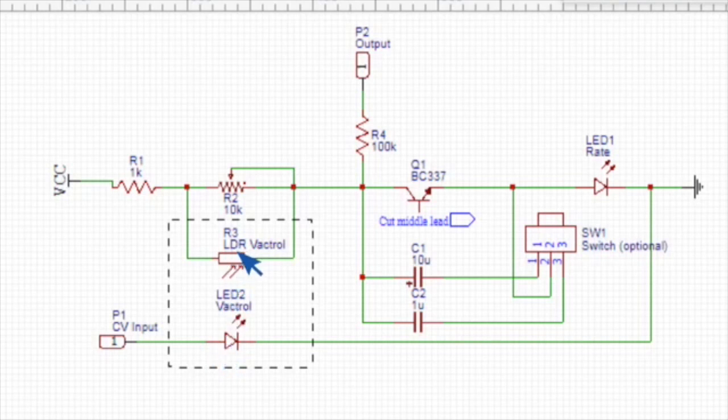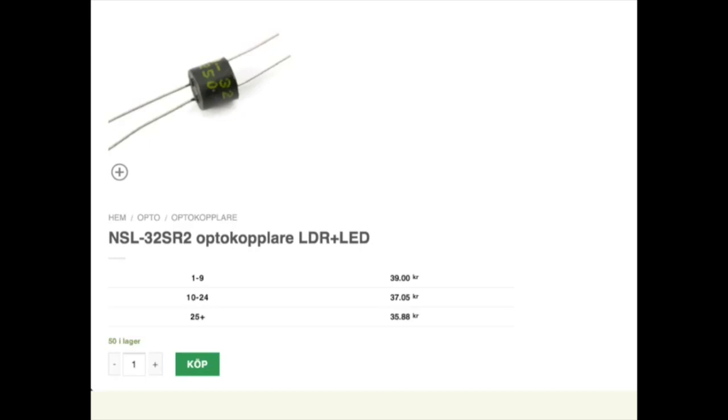An LDR is a light dependent resistor. In the case of the reverse avalanche VCO, we want to change the frequencies, and instead of having a potentiometer, we have the LDR connected in parallel with the potentiometer. As we put CV voltage in here, we light up this LED which shines on the LDR, which lets the signal through.